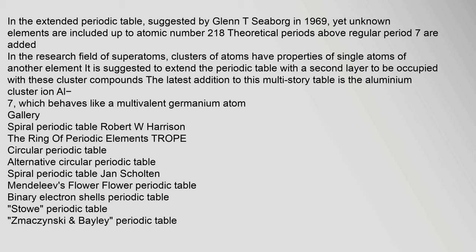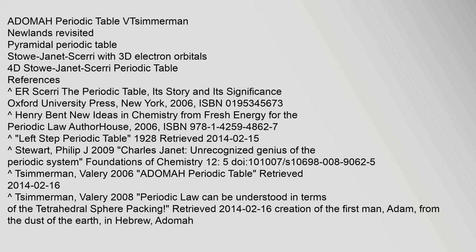Gallery includes: Spiral periodic table by Robert W. Harrison, the Ring of Periodic Elements, Trope Circular periodic table, Alternative Circular periodic table, Spiral periodic table by Jan Scholten, Mendeleev's Flower, Binary electron shells periodic table, and the ADOMA Periodic Table by V.T. Simmerman, as well as Newlands Revisited pyramidal periodic table and Janet Sherry tables with 3D electron orbitals.